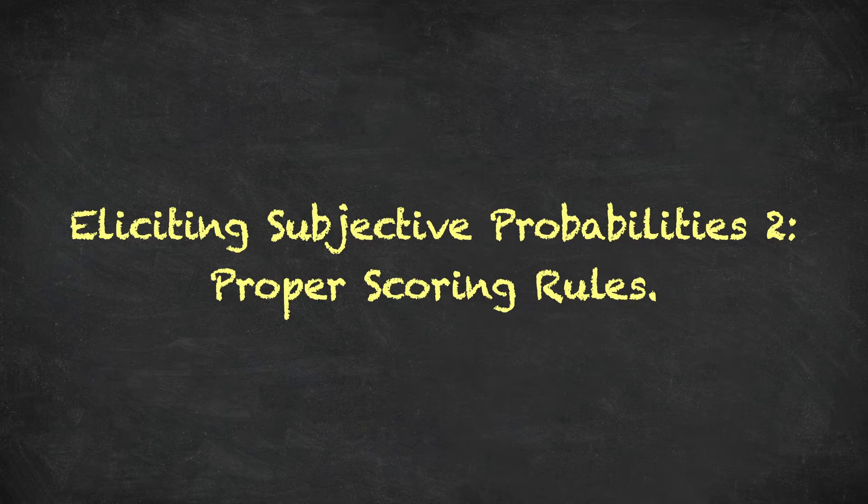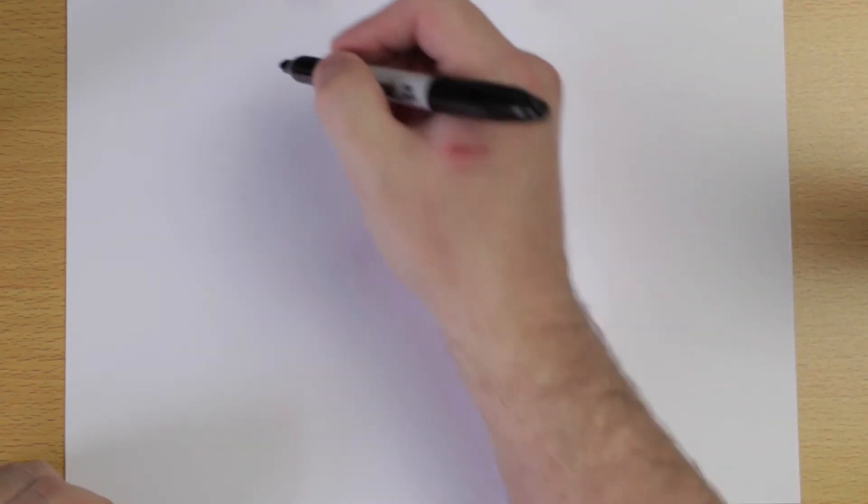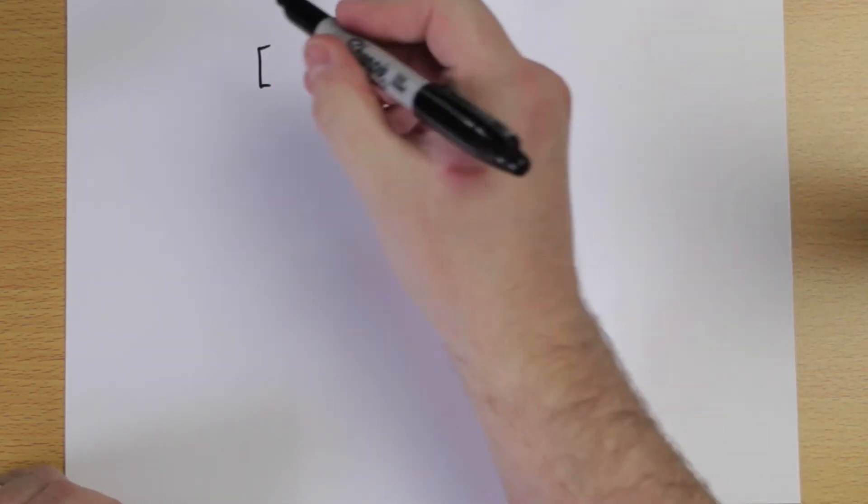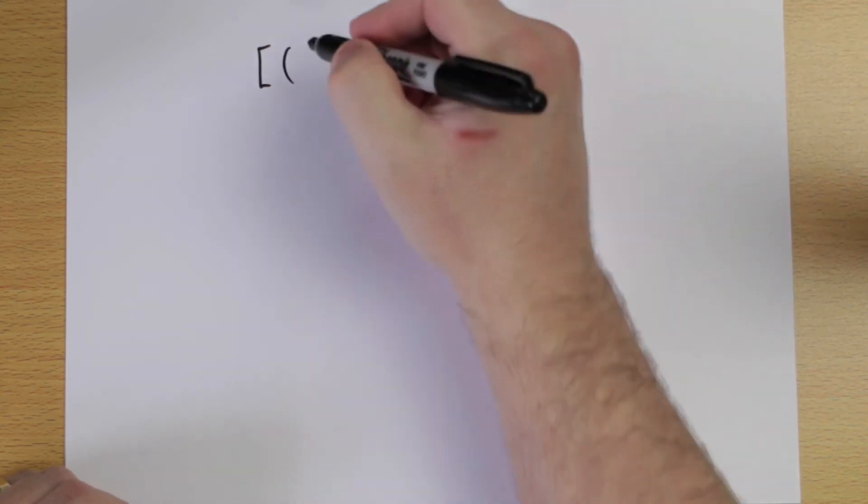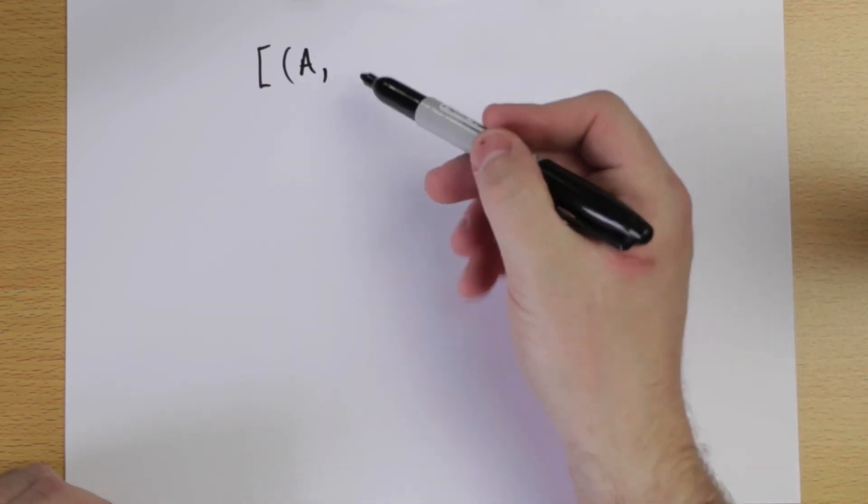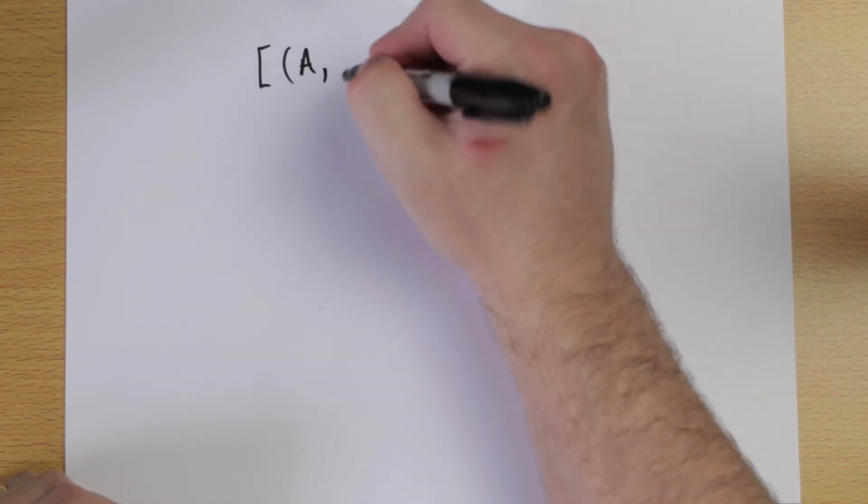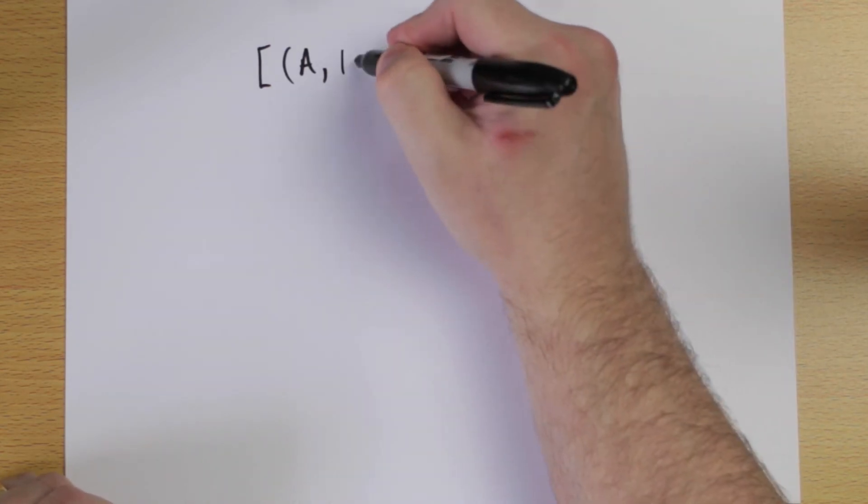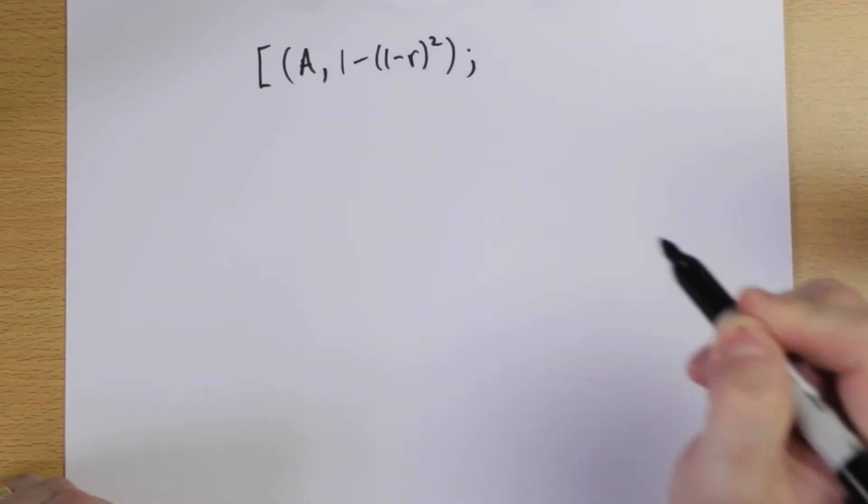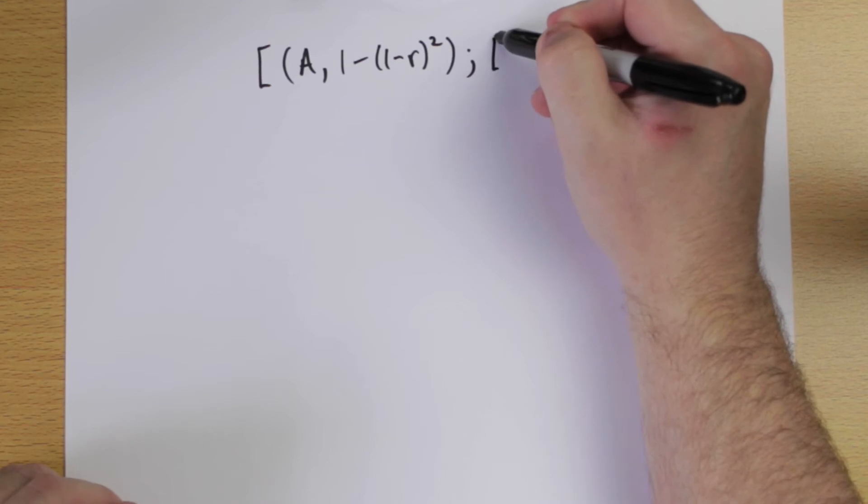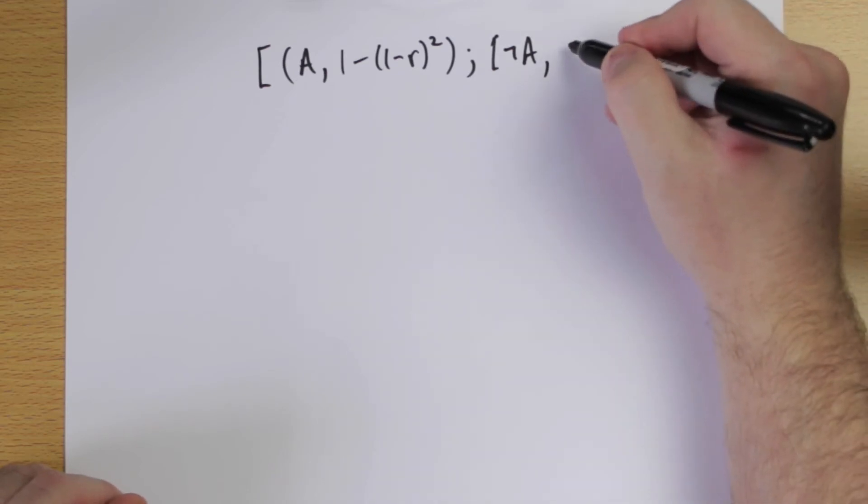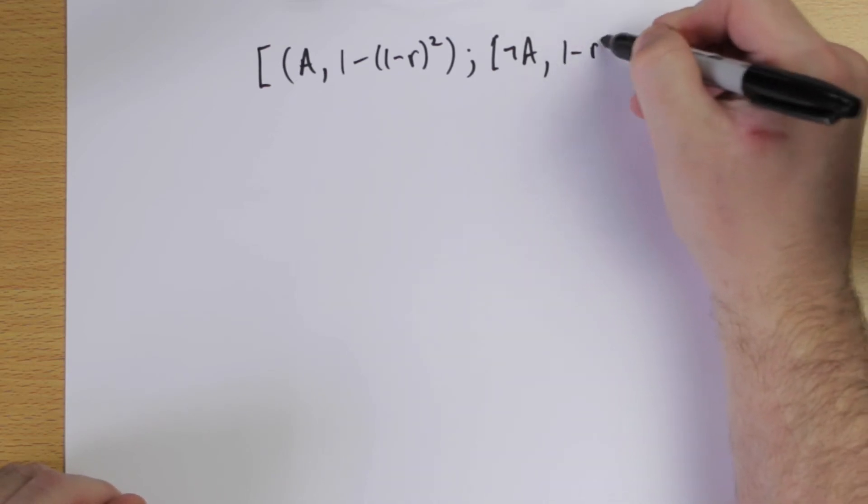Okay, so now let's have a look at something called a proper scoring rule. So what is a proper scoring rule? Essentially, I'm going to represent it as this uncertain type of action. So let's imagine that we're interested in an event A and I'm going to give you some outcome if the event A happens, okay? So there's a formula for this: 1 minus (1 minus R) all squared. And if the event not A happens, well, then your payment is 1 minus R squared. Okay?